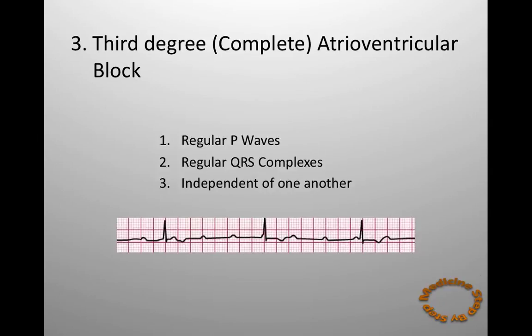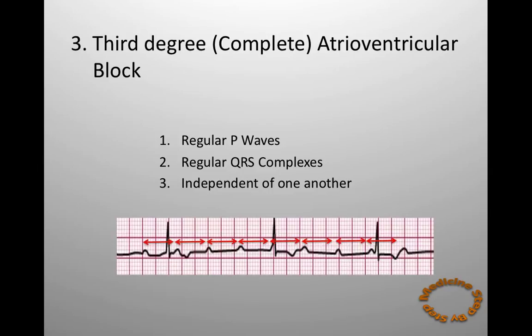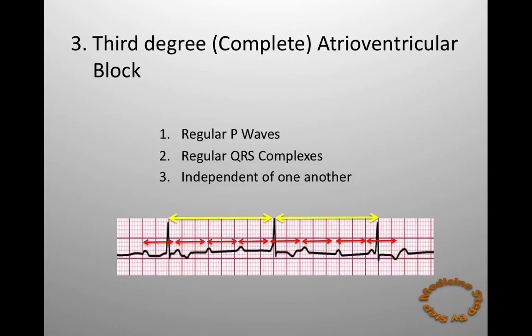So again, there are regular P waves and regular QRS complexes, but they are independent of each other. Here I have highlighted the regular P waves, and now the regular QRS complexes. You can see that there is no relation between the atria and the ventricles.